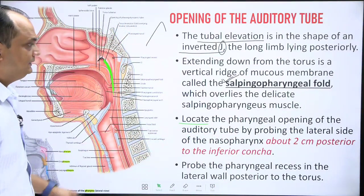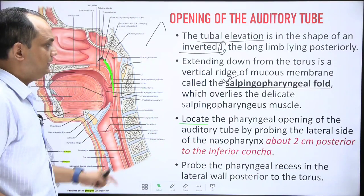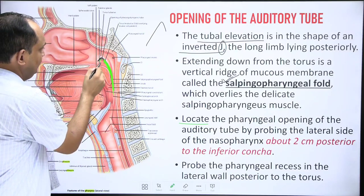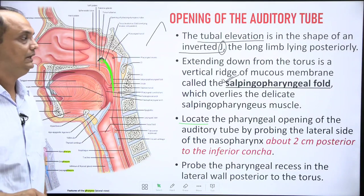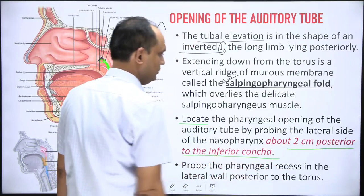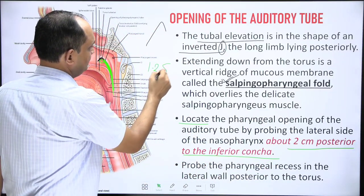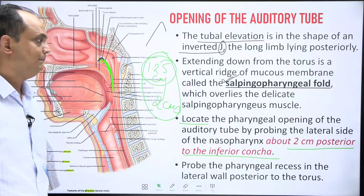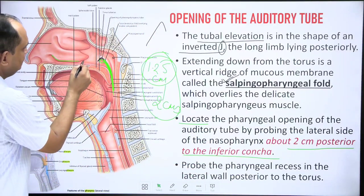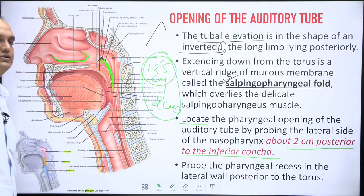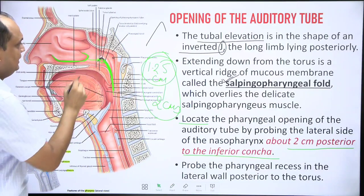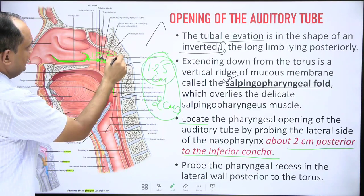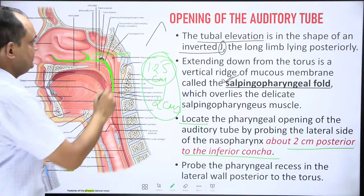To locate the pharyngeal opening of the auditory tube during dissection, pass a small probe through the lateral wall of the nasopharynx. The anatomical landmark is that the opening lies approximately 1.25 to 2 centimeters posterior to the inferior concha. The inferior concha is the projection from the lateral wall of the nose, and the distance from its posterior border to the auditory tube opening varies from 1.25 to 2 centimeters.